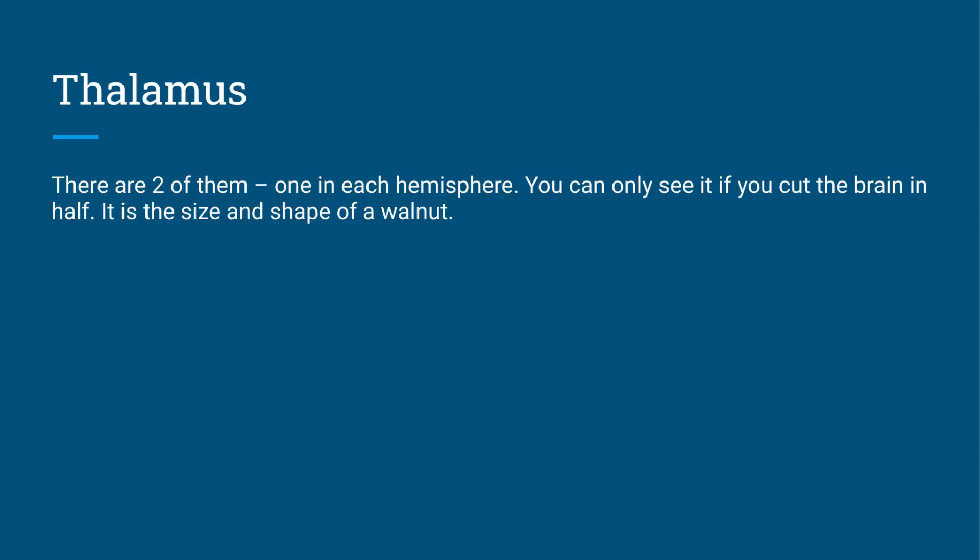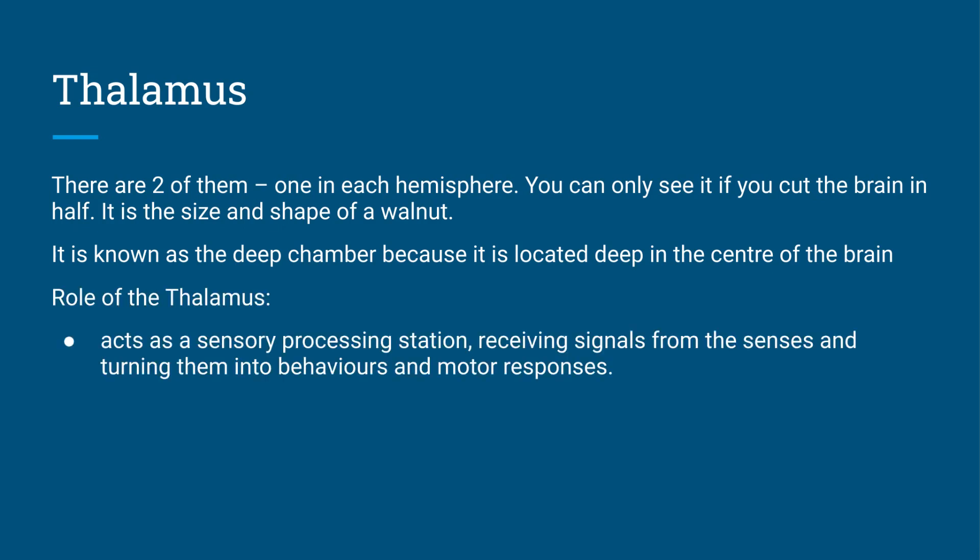Then we've got the thalamus. So there are two of them, one in each hemisphere. And you could only see it if you cut the brain right in half. It's deep right in the middle of the brain and it's the size and shape basically of a walnut. And it's known as the deep chamber because it's located deep within the center of the brain. Now the thalamus has a range of different roles. It acts as a sensory processing station, so it gets signals from all of your different senses and then turns them into behaviors and motor responses.